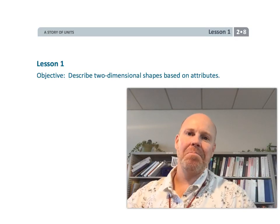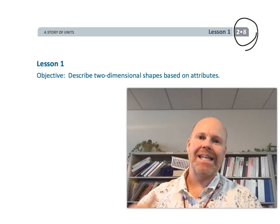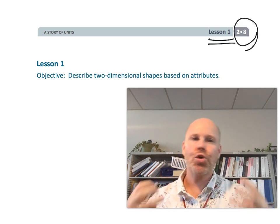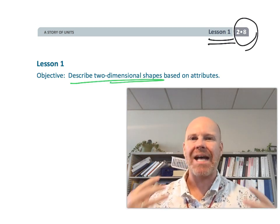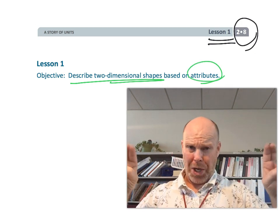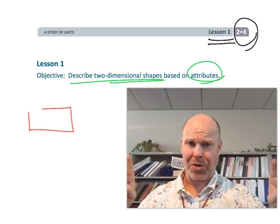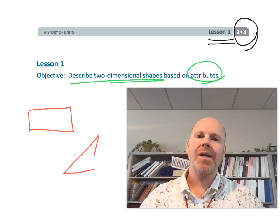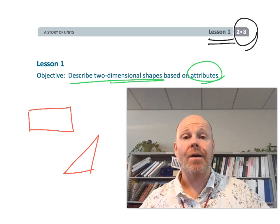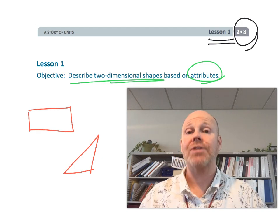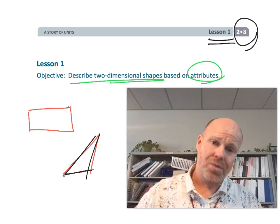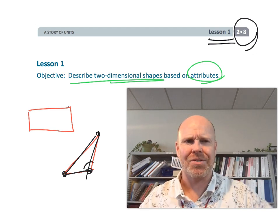All right, this is second grade, module 8, lesson 1. In this lesson, students are going to be describing two-dimensional shapes based on their attributes. The idea is we aren't going to be studying rectangles or triangles. Instead, we're going to be talking about shapes and identifying them by their characteristics — their attributes — like they have three sides, or they have three corners, or they have three angles. So let's get started.